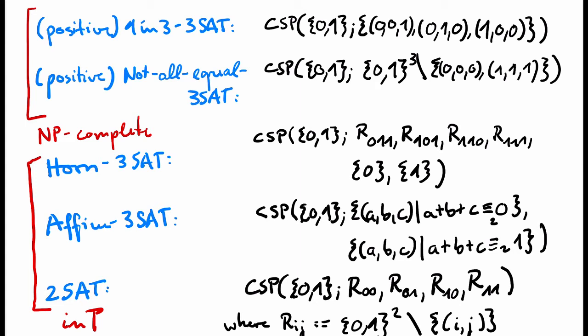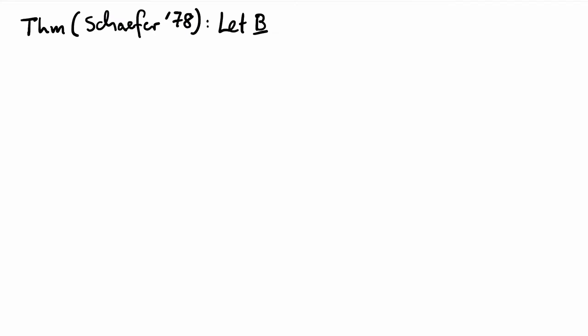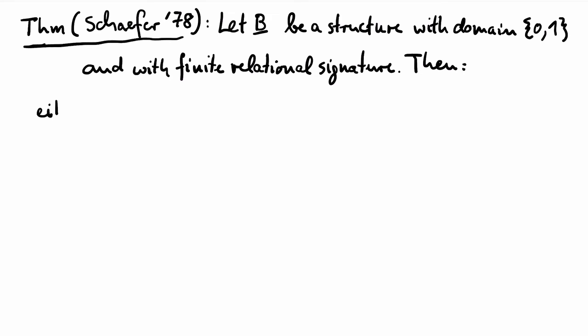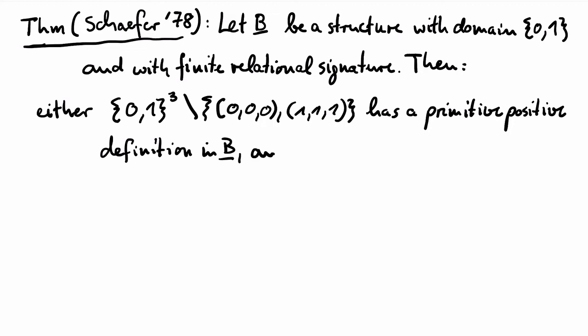I will now state Schaefer's theorem. Let B be a structure with domain {0,1} and a finite relational signature. Then either there is a primitive positive definition of the ternary relation from the not-all-equal 3-SAT problem, and in this case we already know that CSP(B) is NP-hard from our video about primitive positive definability and the NP-hardness of the not-all-equal 3-SAT problem.